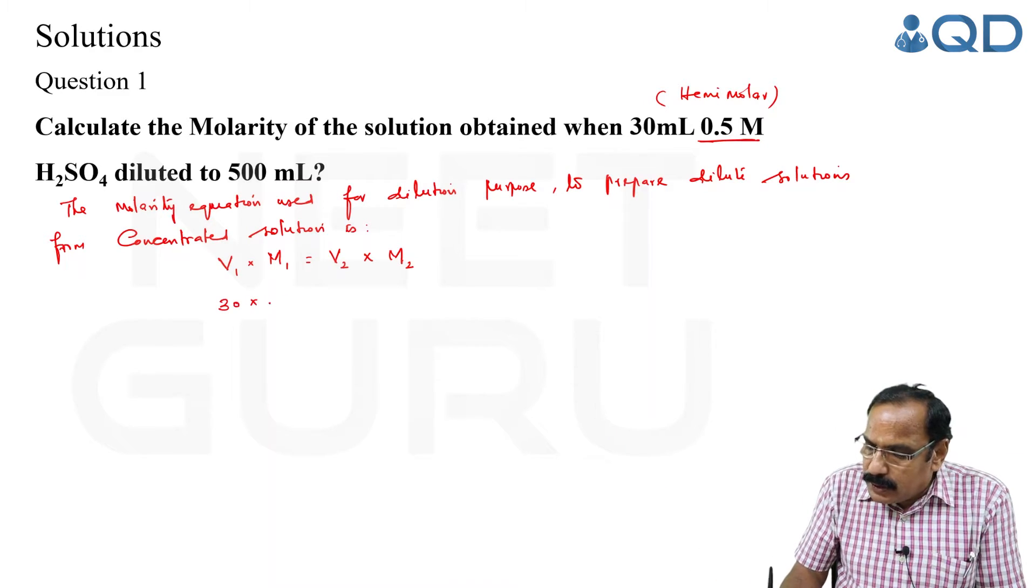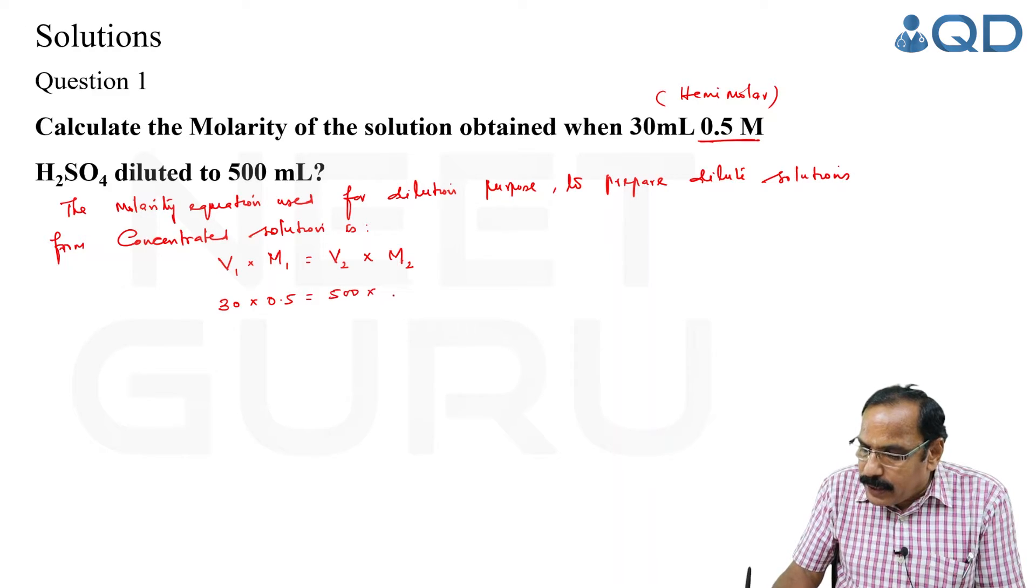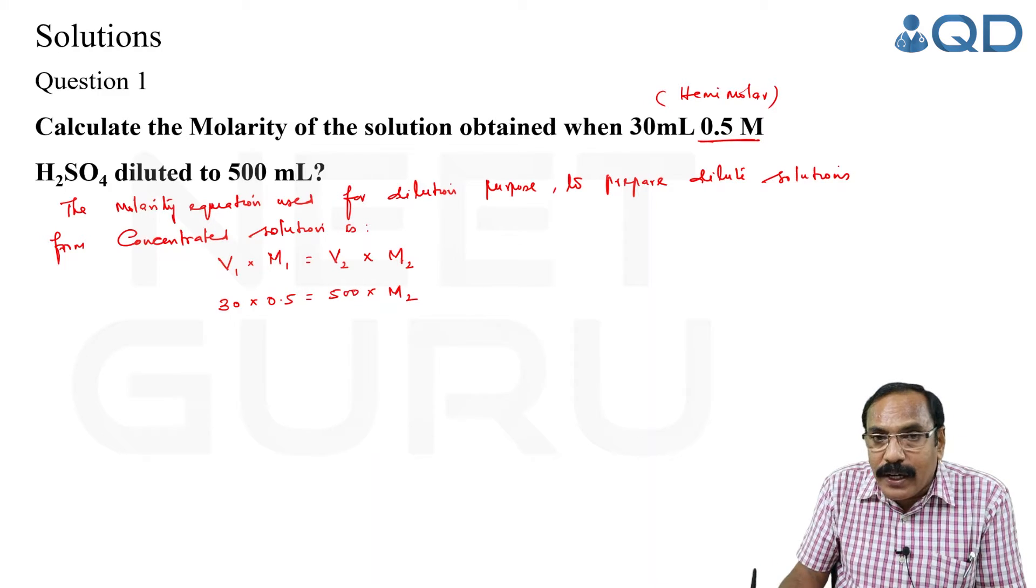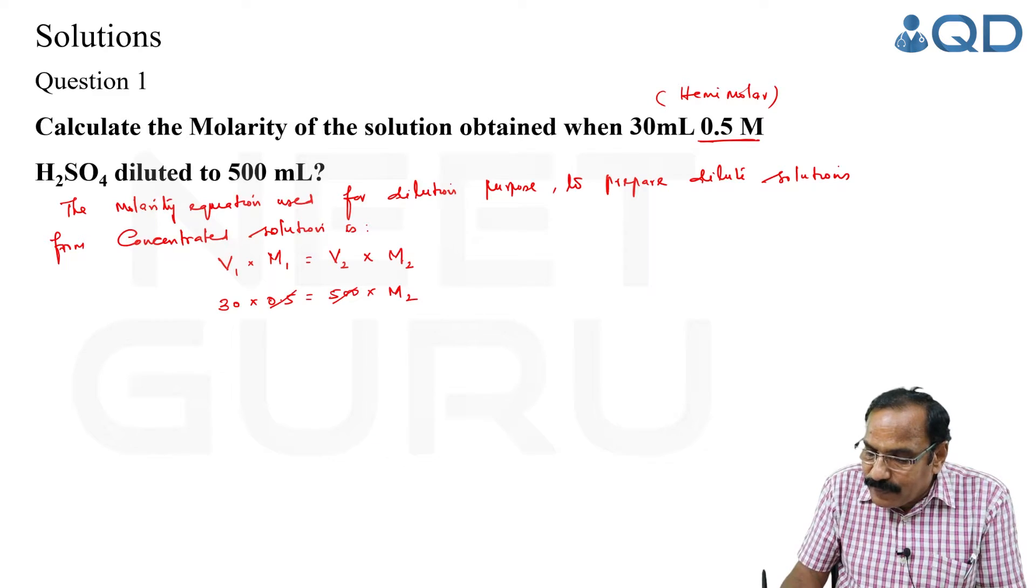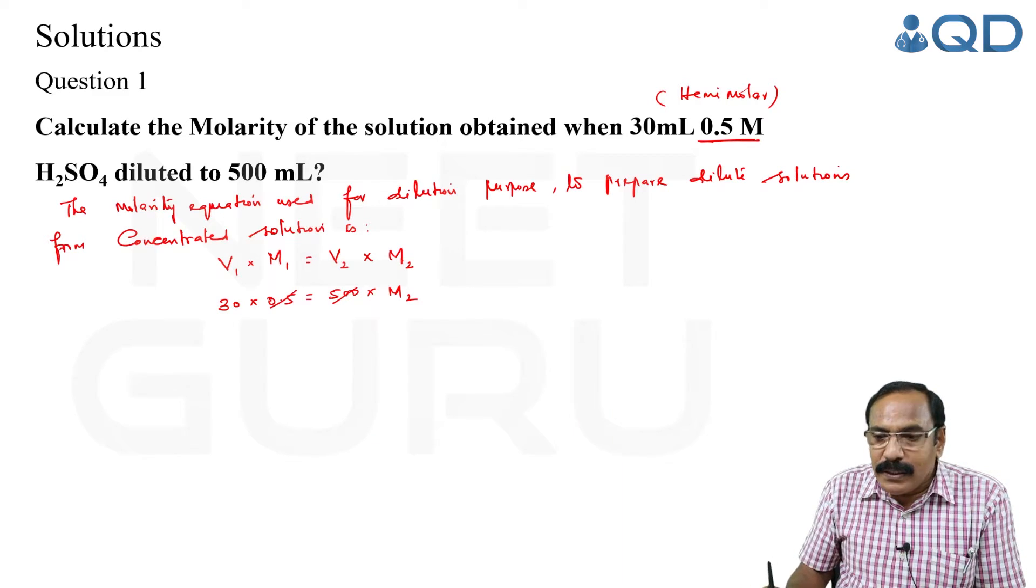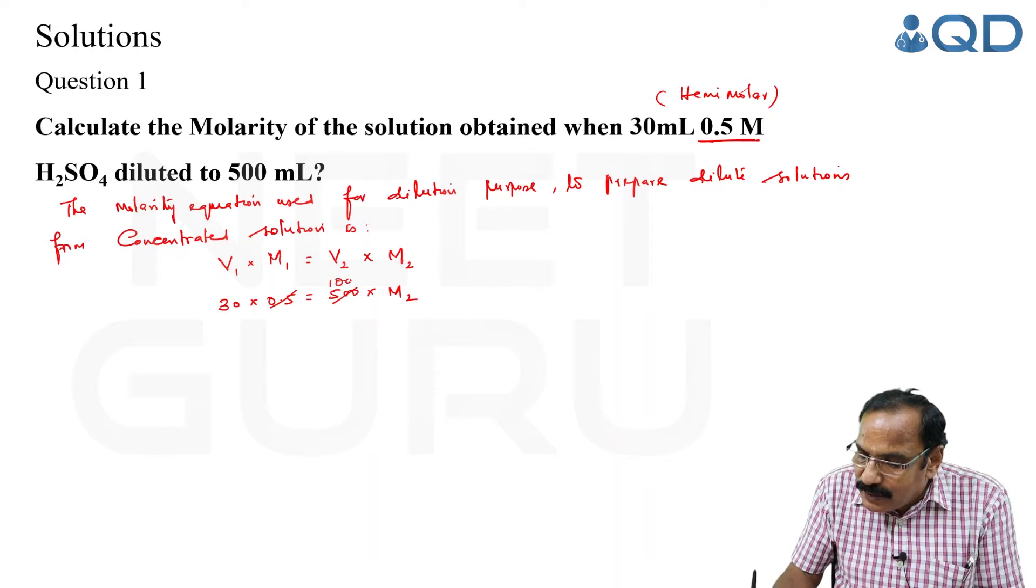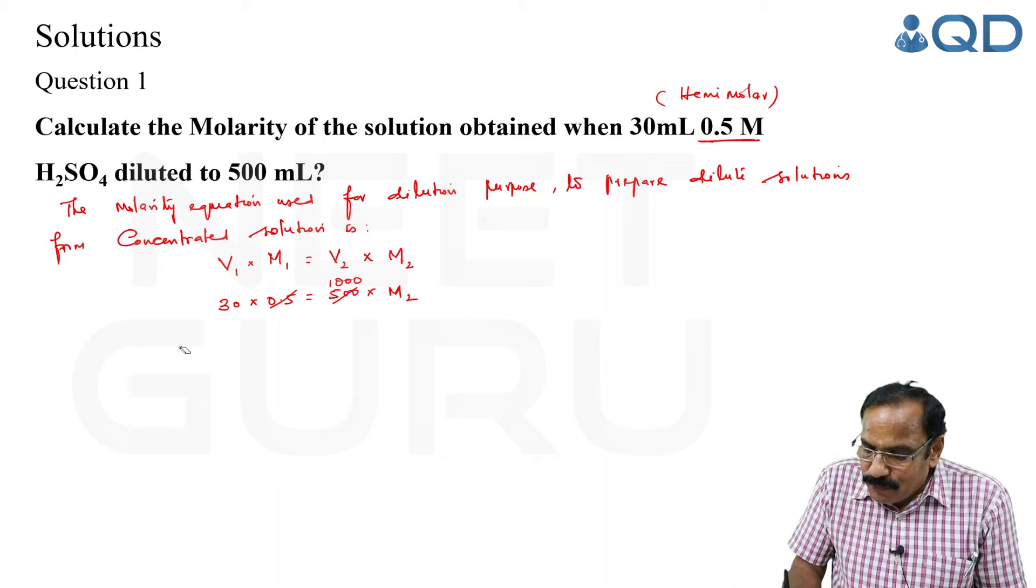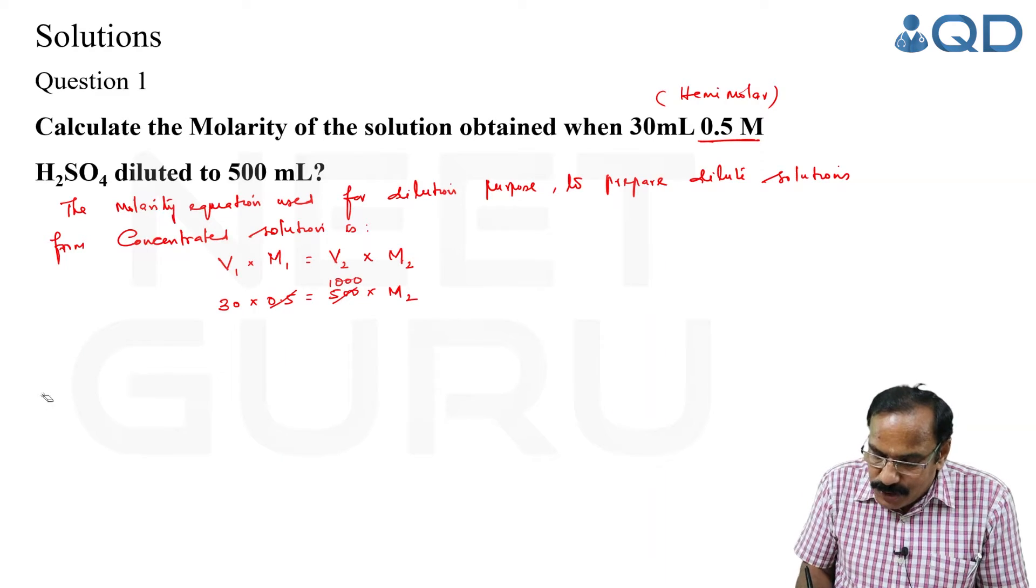30 × 0.5 = 500 × M₂. You see, this 500 and this 0.5 - it goes 1000 times. Therefore, the final molarity of the solution is: